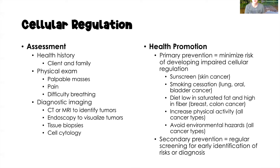From a health promotion perspective, primary prevention aims to minimize the risk of developing impaired cellular regulation. Examples include: sunscreen to help prevent skin cancer; smoking cessation to help prevent lung, oral, and bladder cancer; diets low in saturated fat and high in fiber to help prevent breast and colon cancer; and increasing physical activity and avoiding environmental hazards to help prevent all types of cancers.